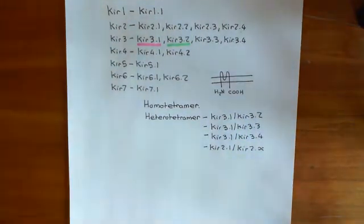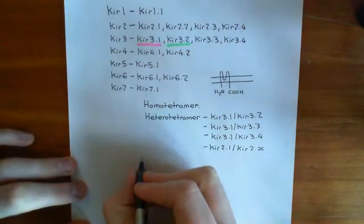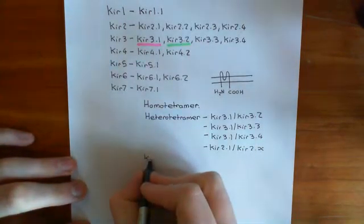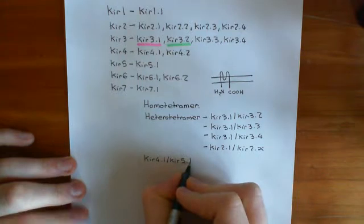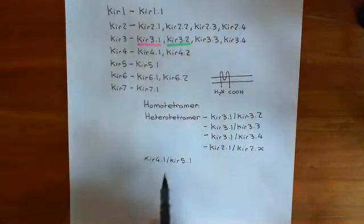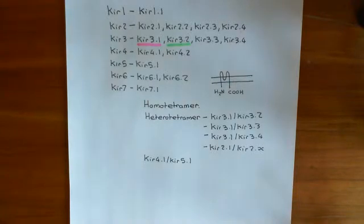However, there is a good example of a break in the rule that you always make heterotetramers within the same family: you have a tetramer of KIR4.1 with KIR5.1. This is a heterotetramer where the two subunits involved are not in the same family, and that's the archetypal example of an inwardly rectifying heterotetramer where the two different types of subunits are not in the same family.